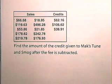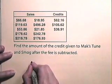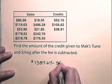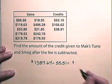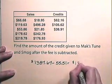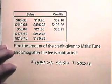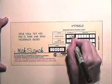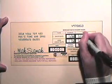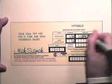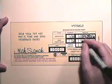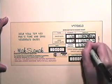Find the amount of the credit given to this business after the fee is subtracted. The gross deposit was $1,387.67. The fee was $55.51, so the credit given to Max Tune & Smog is $1,332.16. Now let's fill out the credit card slip. We had 10 sales and three credit slips. The amount of sales was $1,595.36, credits were $207.69, and the gross amount was $1,387.67.